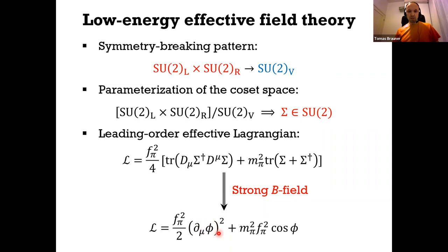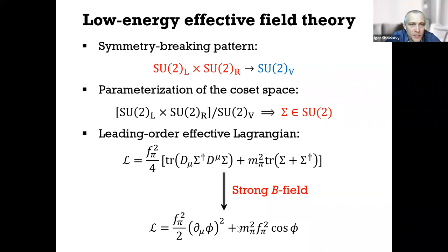In sufficiently strong magnetic fields but still weaker than the QCD scale, what's left in the low energy spectrum is just the neutral pion. The whole thing boils down to an effective theory for a single real field φ — the neutral pion field — which is dimensionless, essentially a complex phase in the original SU(2)-valued matrix. This is the leading order effective Lagrangian for the neutral pion only, and if you restrict to 1+1 dimensions this is basically the Lagrangian of the Sine-Gordon model.